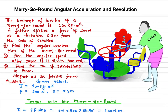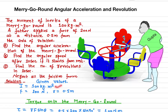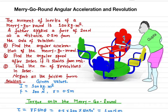The moment of inertia of the merry-go-round is 100 kilogram meter squared. A father is applying a force at the end of the merry-go-round — the force is 200 Newtons — at a distance of 0.5 meters (or 50 centimeters) from the axis of rotation.